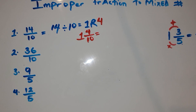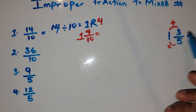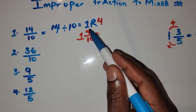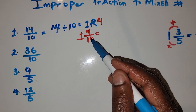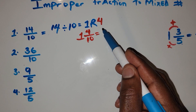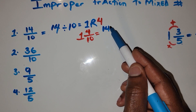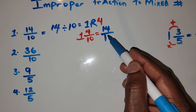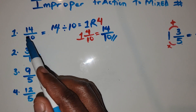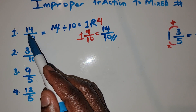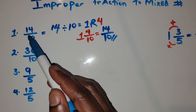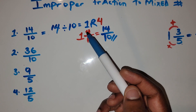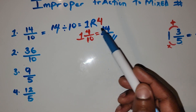So we have the mixed number 1 and 4 over 10. We do 10 times 1 is 10, plus 4 is 14, and then we just bring the denominator down. That's our answer. As you can see, we solved from an improper fraction to a mixed number, and back again.